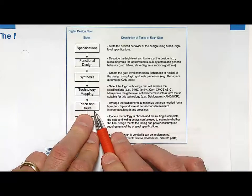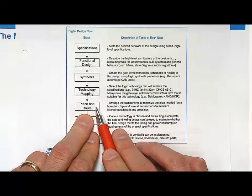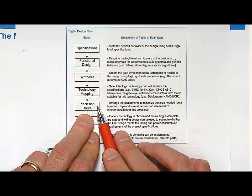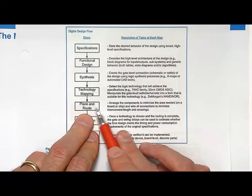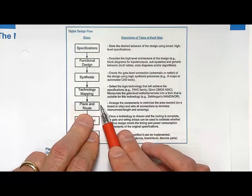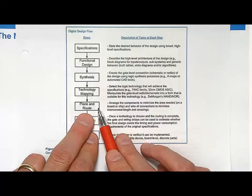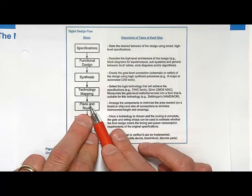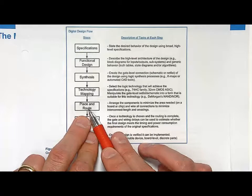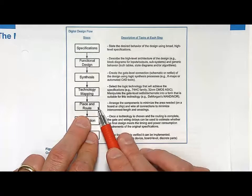Then you start placing and routing. This is where you move the parts around, you get them in a position so that the routing is minimized, and then you route the wires together. At that point you can actually get information about the delay of the timing or the timing of the routing and the actual gates themselves.